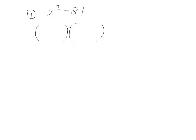A difference of two squares is a bracket with a plus and a bracket with a minus. We take the square root of x squared, which is x, and the square root of 81, which is 9. The final answer to this question is x plus 9, x minus 9.